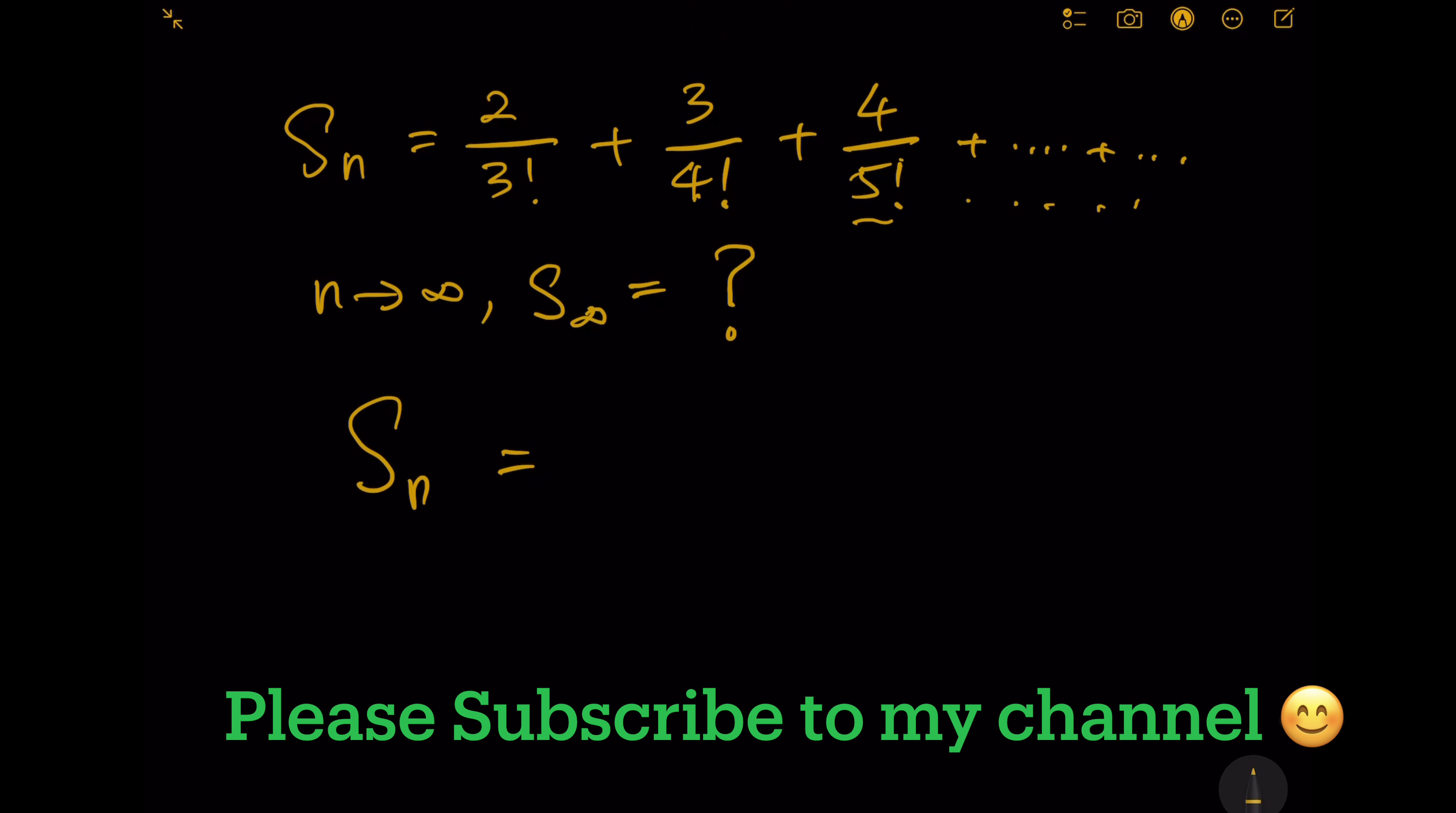If you look at the top part of the series, the numbers start with 2 and increase by 1, which means n plus 1. Divide by the bottom, which starts with 3 factorial, increases to 4 factorial, 5 factorial, and so on, which means n plus 2 factorial.